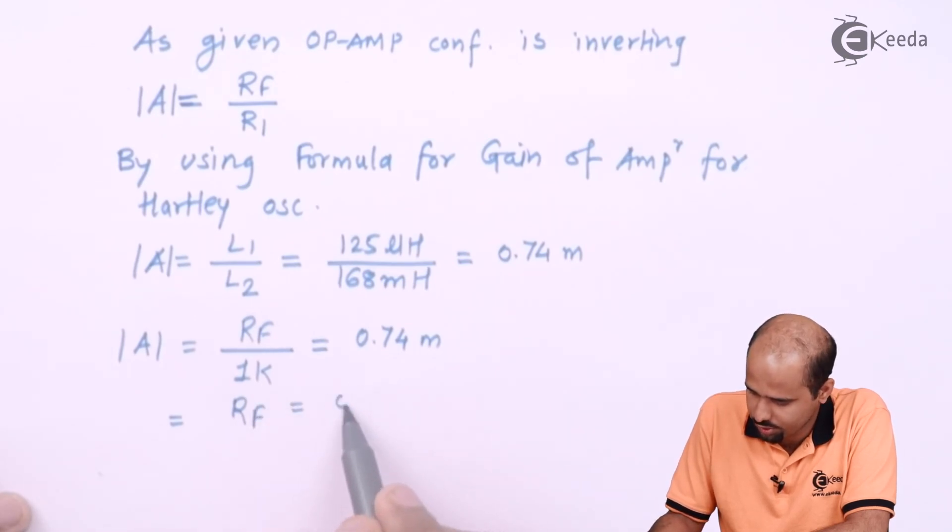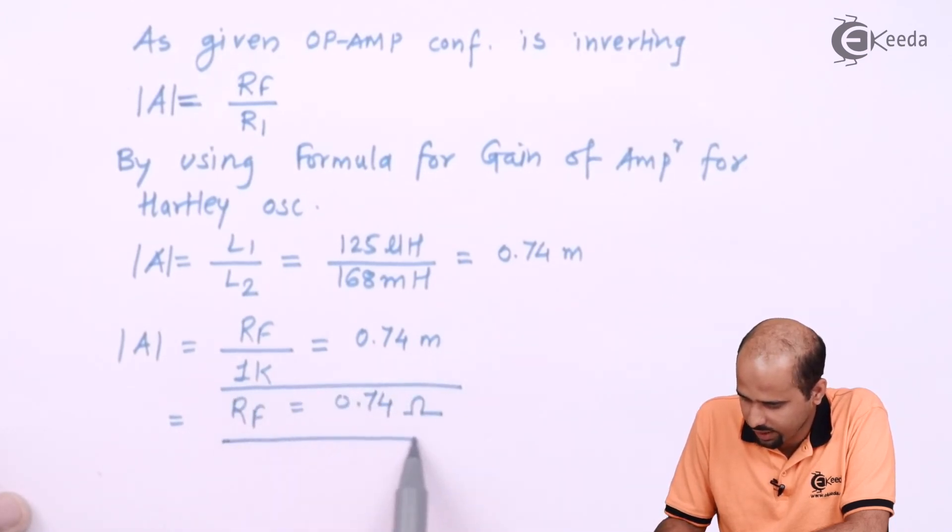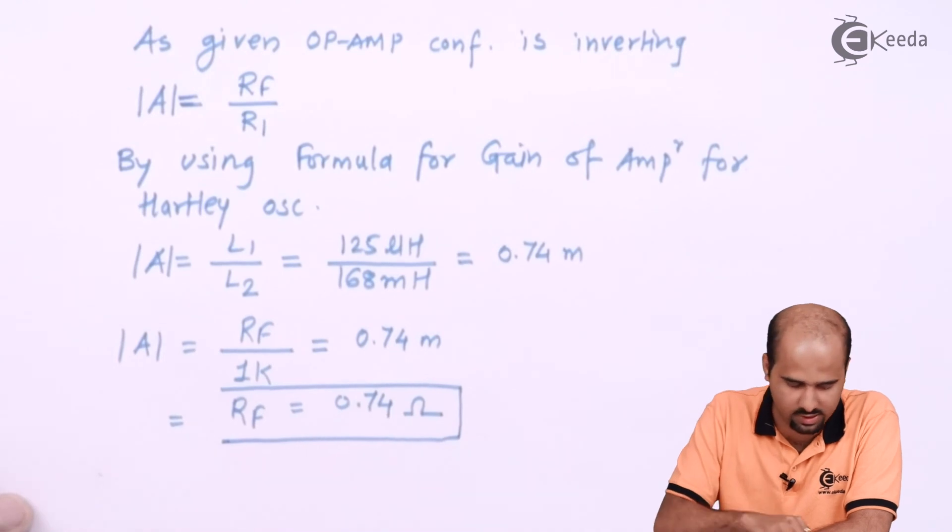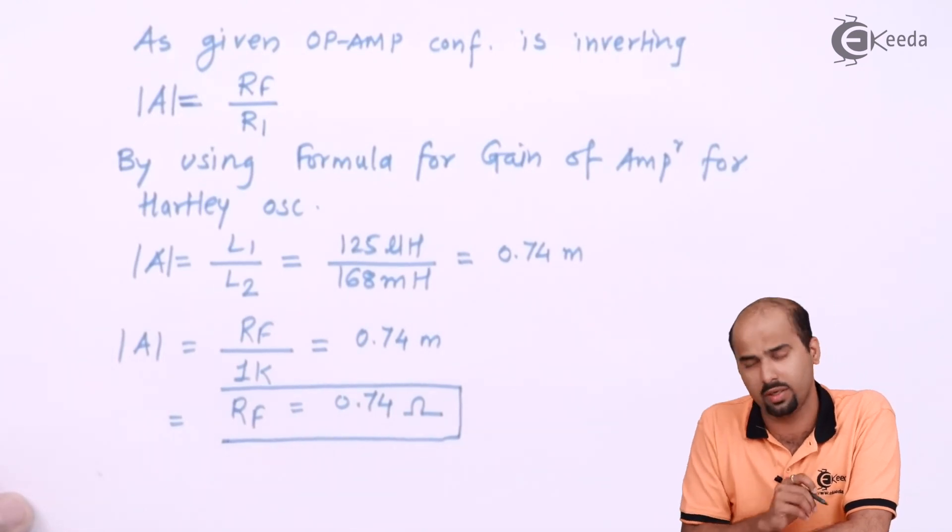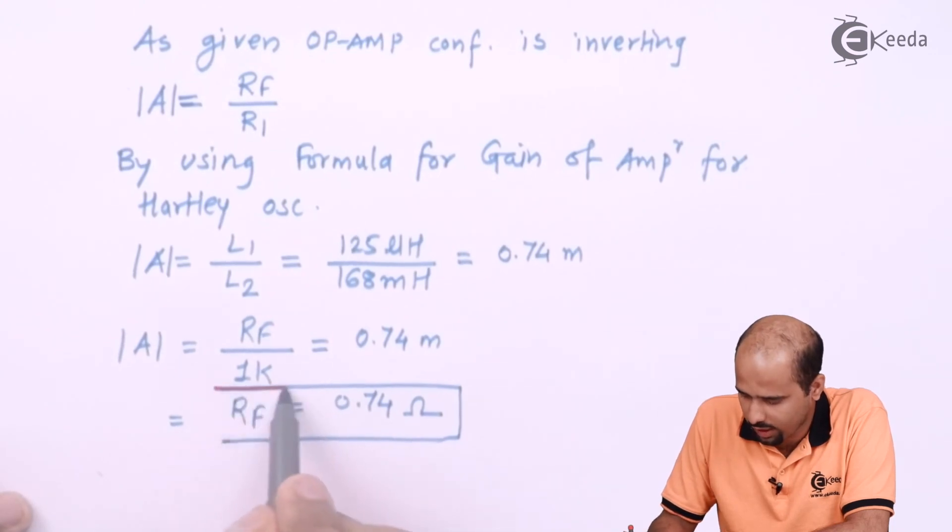so we will say 0.74 ohm, right? It is a very less value I am getting as far as RF is considered, right? So in practical scenario, you will not find that particular value of RF, okay?